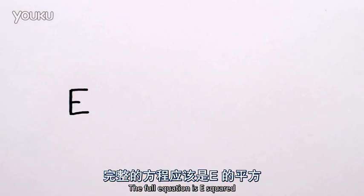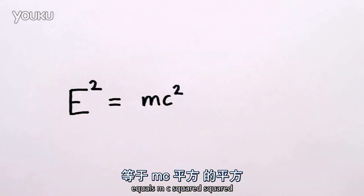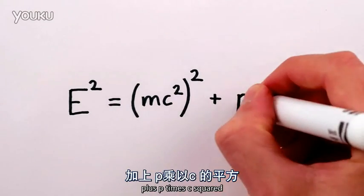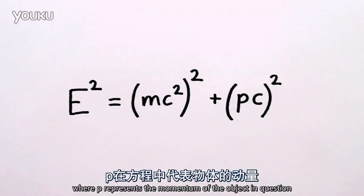The full equation is E squared equals mc squared squared plus p times c squared, where p represents the momentum of the object in question.